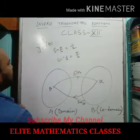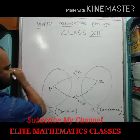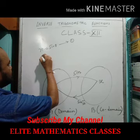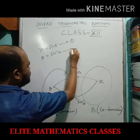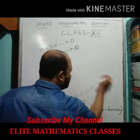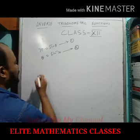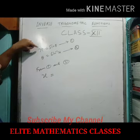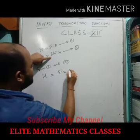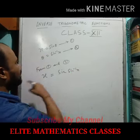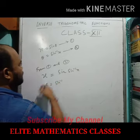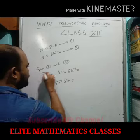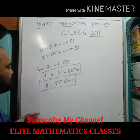In the general case, let θ and x be the variables. We can write x = sin θ as equation one, and θ = sin⁻¹x as equation two. From equation one: x = sin(sin⁻¹x) = x. From equation two: θ = sin⁻¹(sin θ) = θ. These are two very important relations.